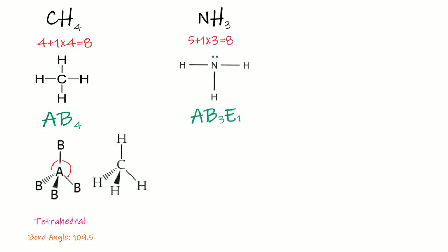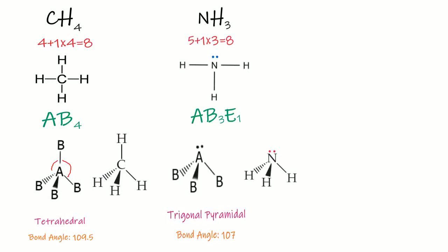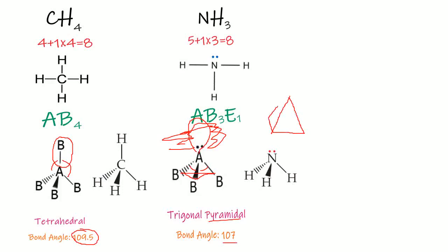Next is ammonia. Its type is AB₃E₁. Any molecule with AB₃E₁ type has a trigonal pyramidal geometry and a bond angle of 107°. Here we are replacing one bonded pair of electrons with a lone pair of electrons. This lone pair occupies more space, so the bond angle decreases from 109.5° to 107°. It is trigonal because of the three bonded atoms, and pyramidal because its shape is like a pyramid.